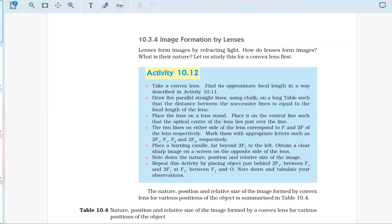Place the lens on the lens stand at the central line such that the optical center of the lens lies just over the line. The two lines on the other side of the lens correspond to F and 2F of the lens respectively. Mark them with appropriate letters such as 2F1, F1, F2, and 2F2.